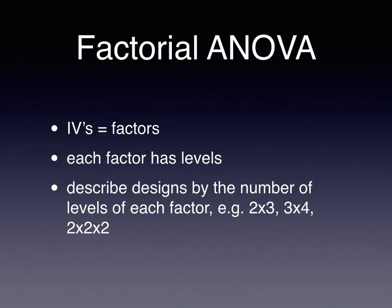It's important to understand that if you have a factor — a single factor — it will have multiple levels. So if you have an independent variable, it varies in at least two different ways. You have at least two different groups for you to have an independent factor or variable.